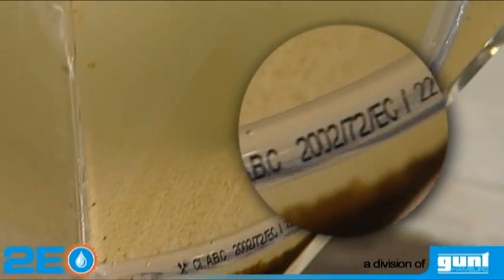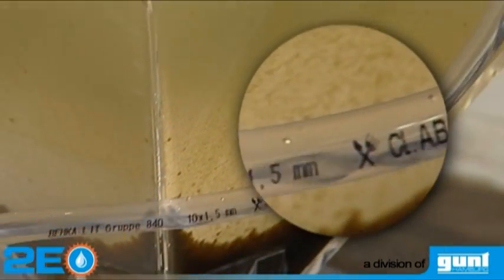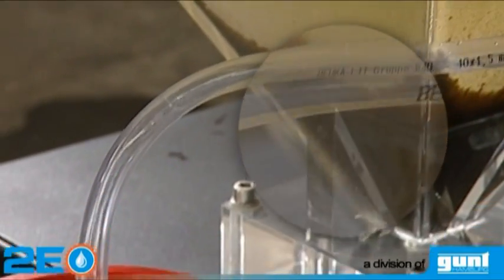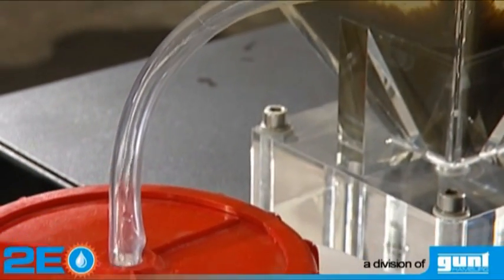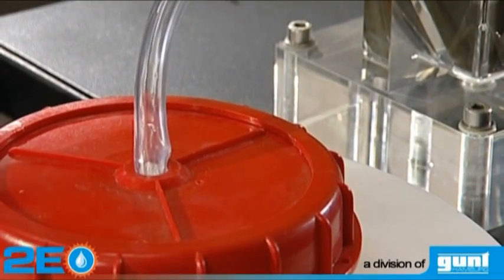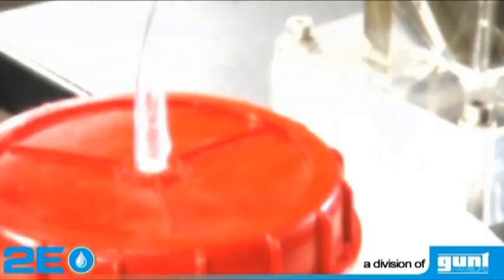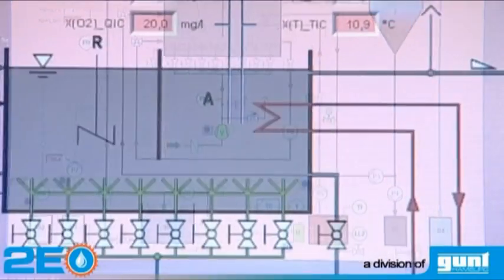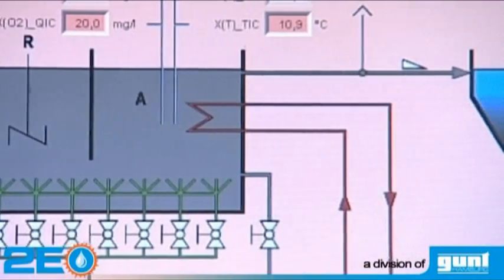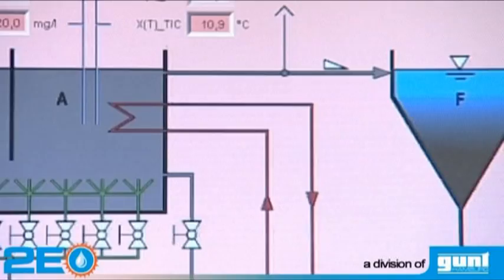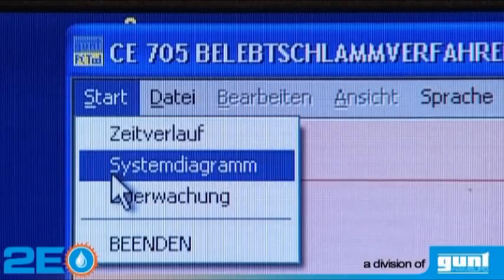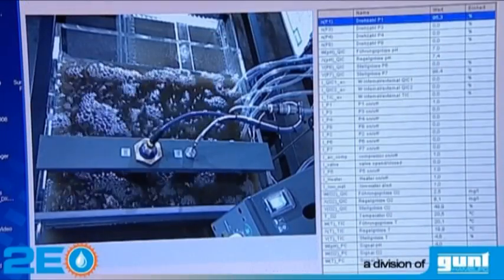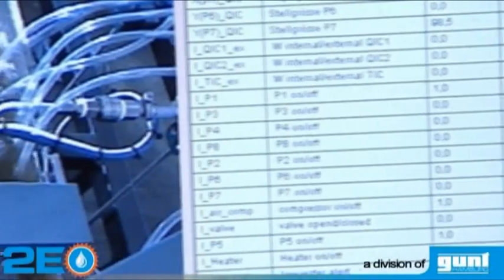While the activated sludge is returned to the aeration tank, the treated water is collected in a separate tank. The software of the CE705 enables comprehensive process monitoring, even with integrated video surveillance capabilities via network.